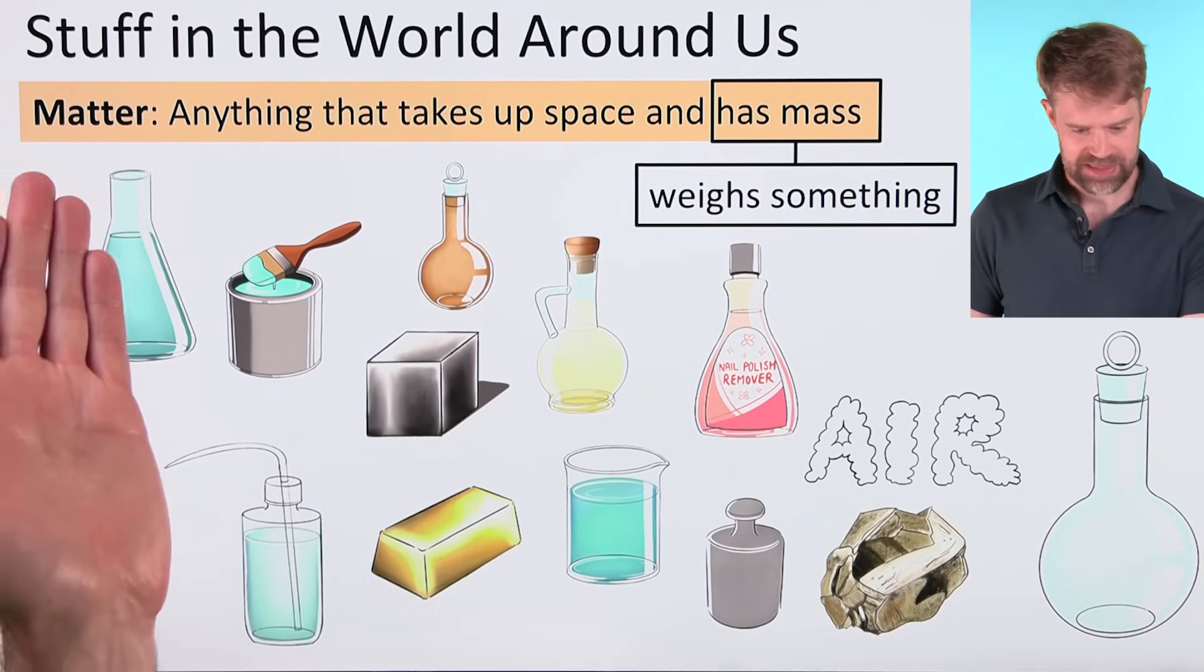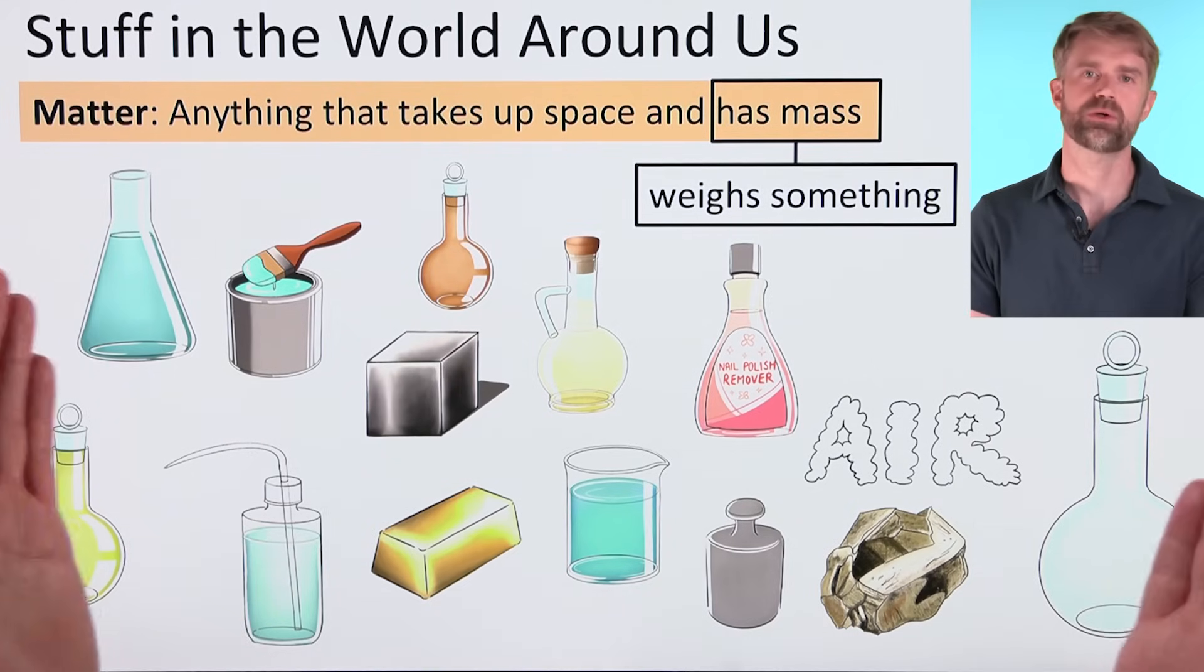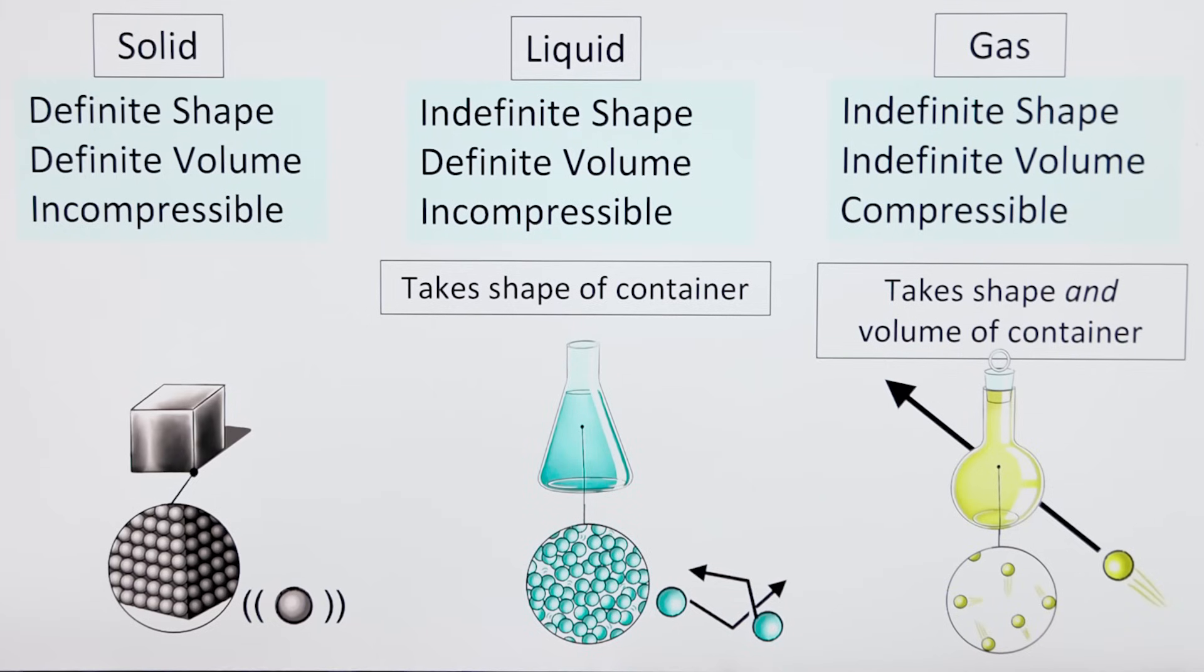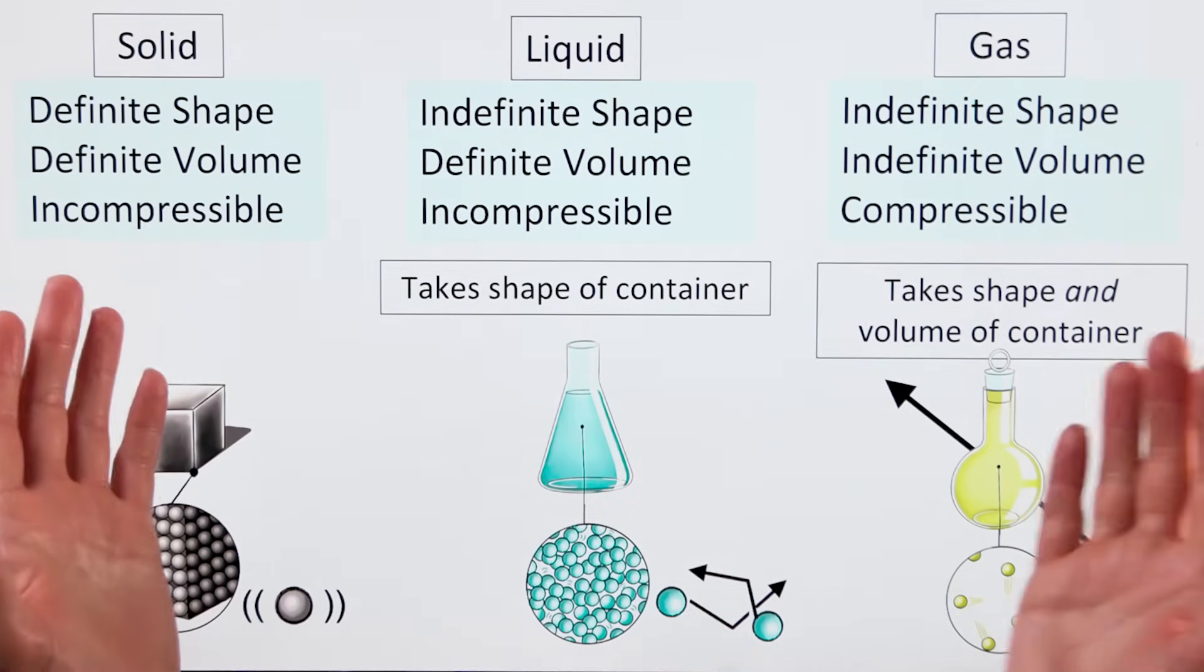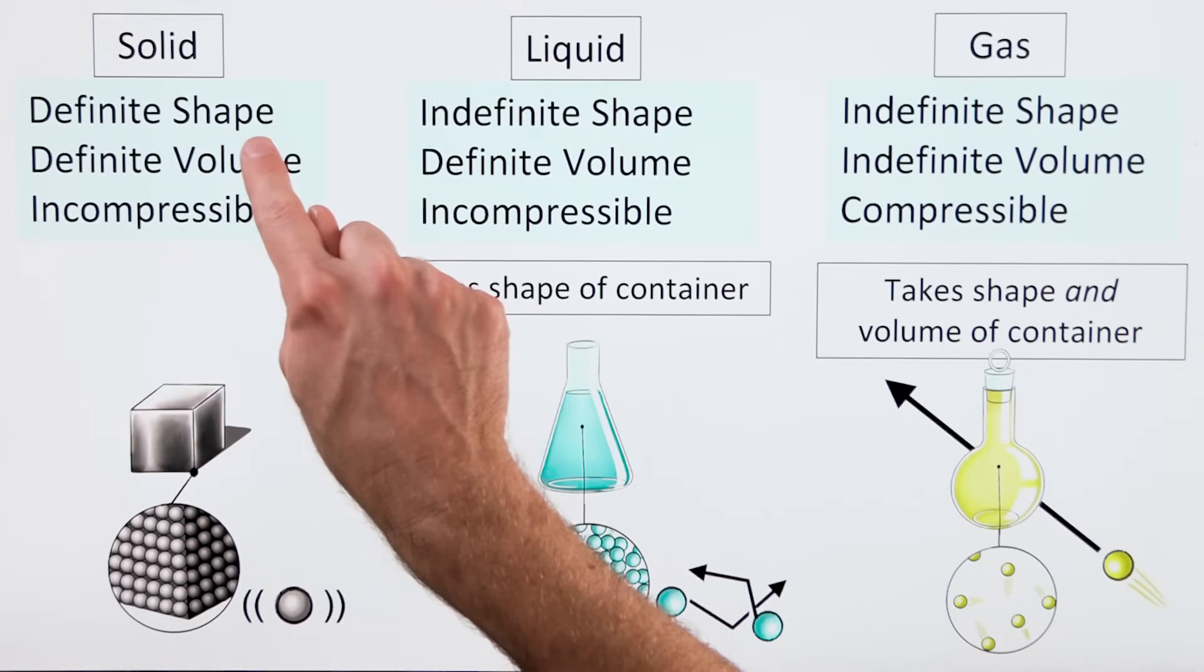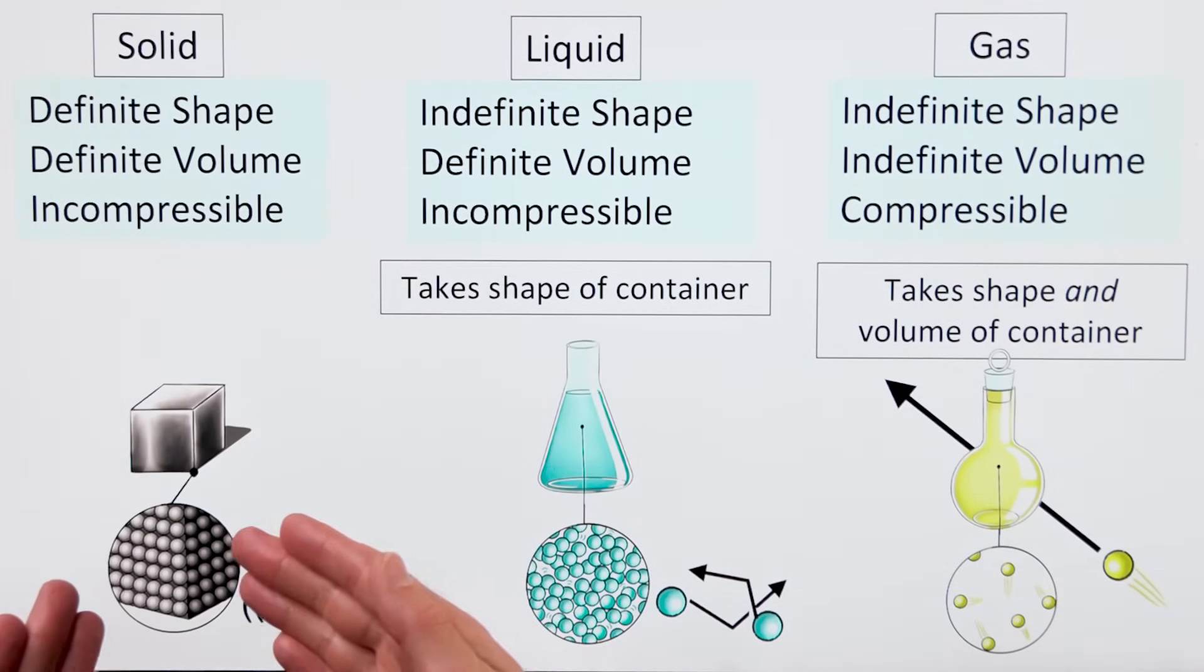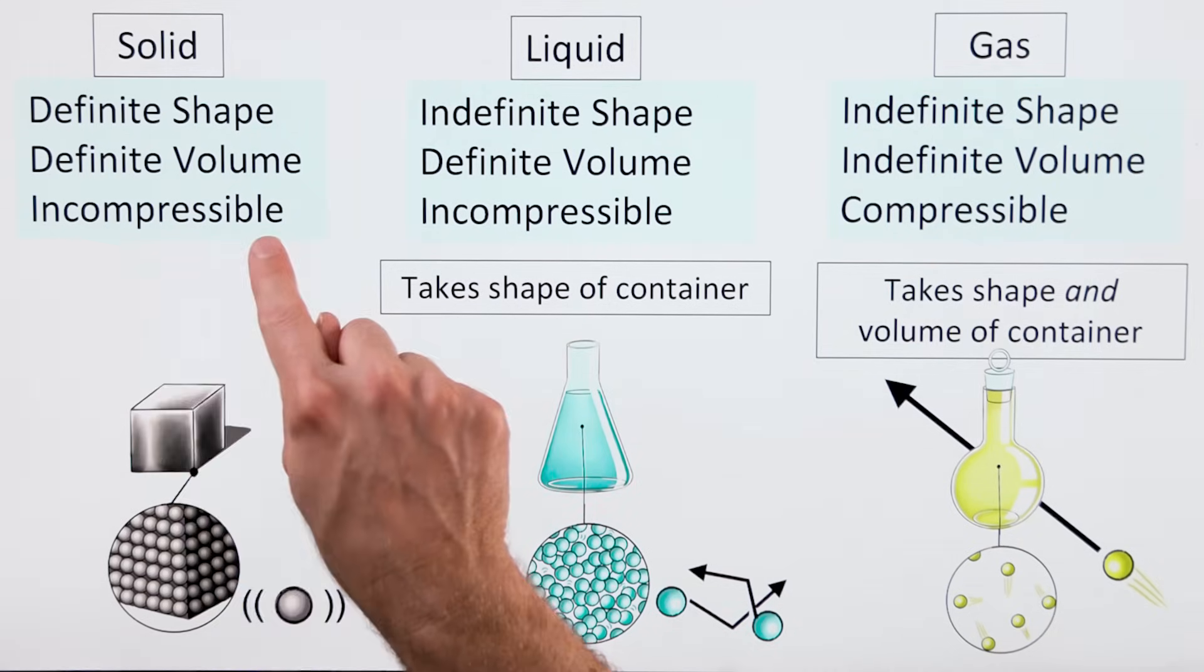First, matter is anything that takes up space and has mass. It's physical stuff. These three phases of matter have different characteristics. A solid has a definite shape and a definite volume. Its particles are closely packed together. They vibrate in place but they don't move around. A solid is hard to compress.